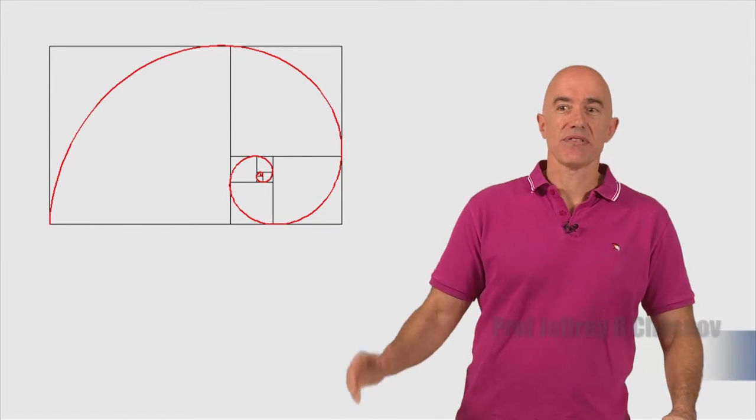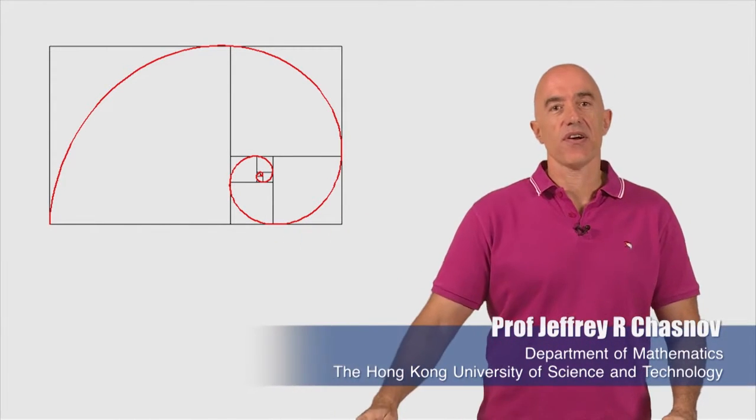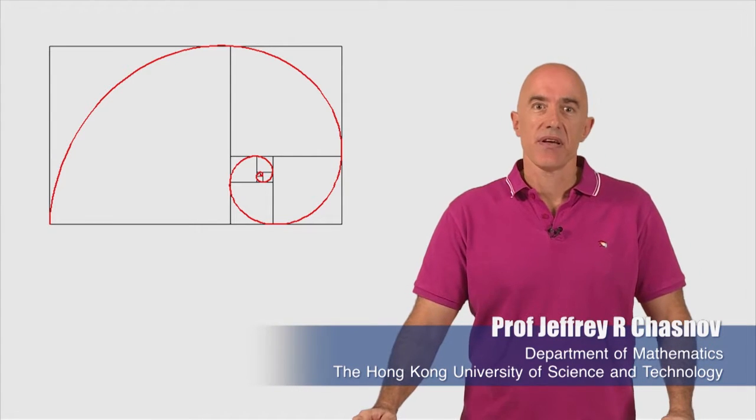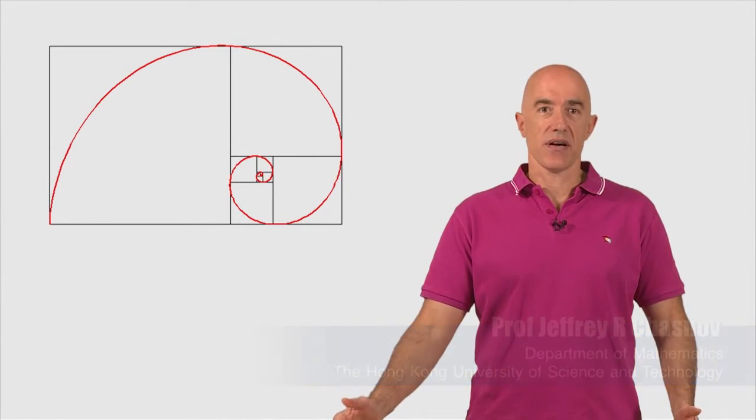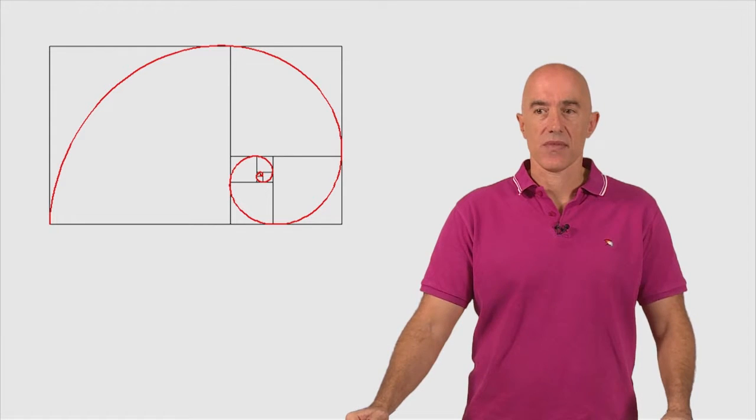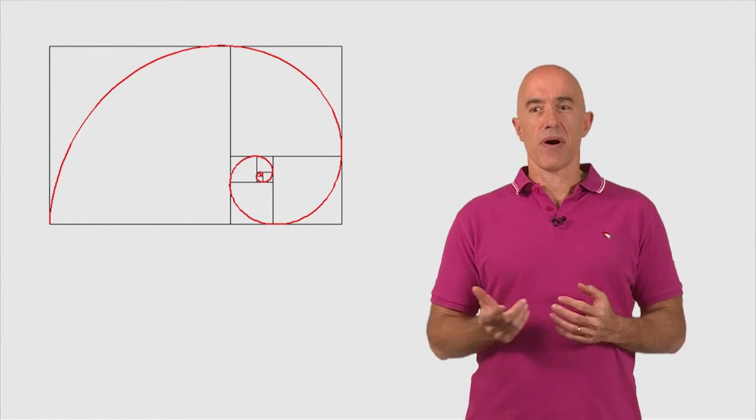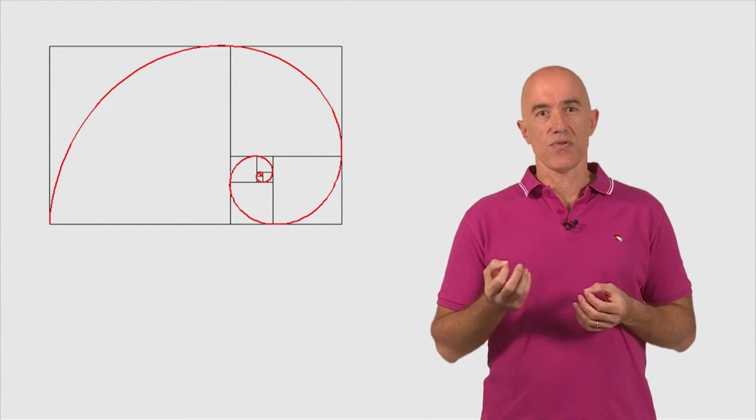Welcome back. I'm standing in front of the figure of the spiraling squares where I've drawn the golden spiral. You see this golden spiral seems to spiral into a point.